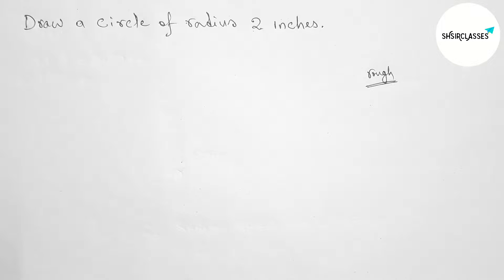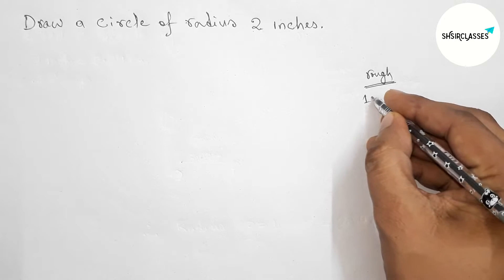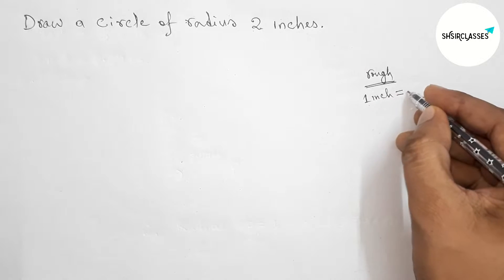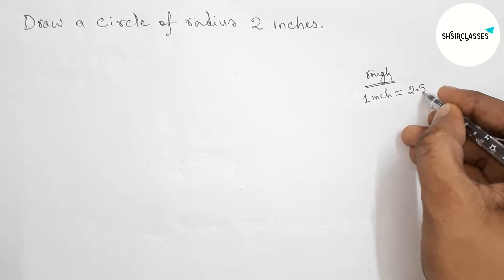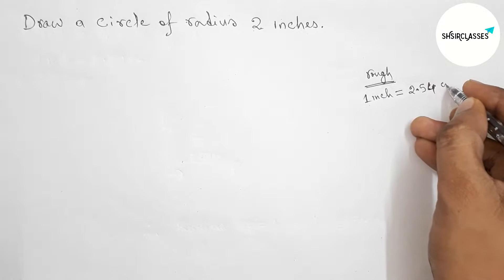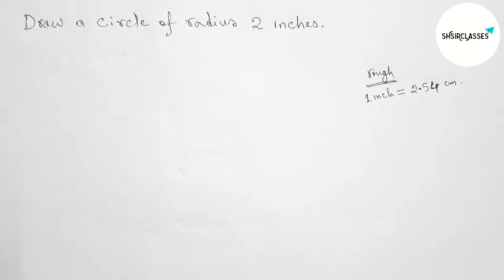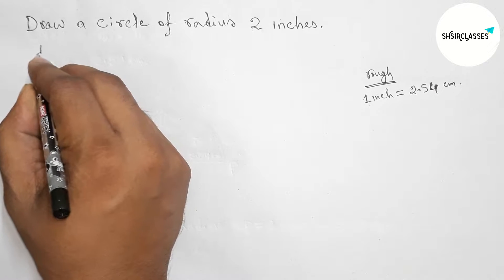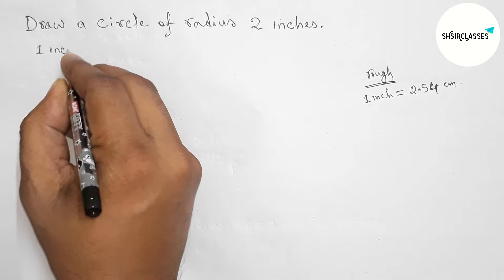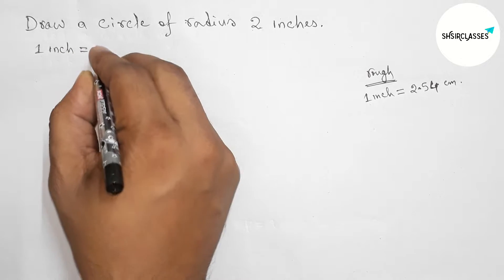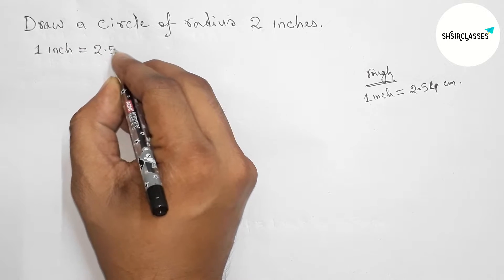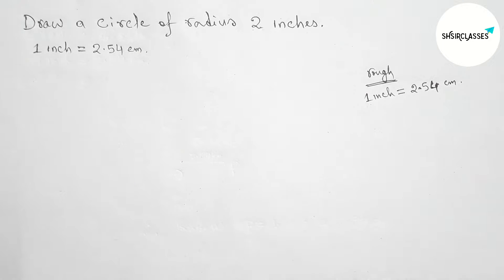First, let's discuss some important notes. We know that 1 inch equals 2.54 centimeters. So first, converting from inch to centimeter: 1 inch is 2.54 centimeters.